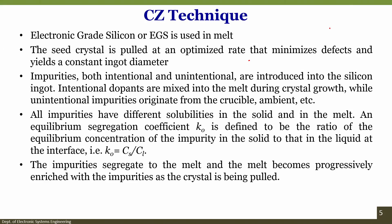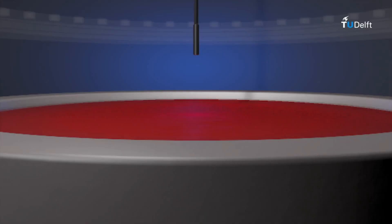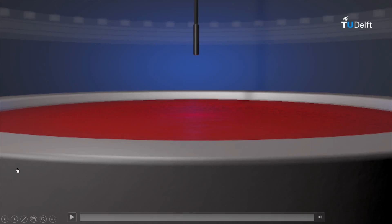Intentional dopants are mixed into the melt during crystal growth, while unintentional impurities originate from the crucible, ambient, etc. All impurities have different solubilities in solid and in the melt. The equilibrium segregation coefficient, defined by K₀, is the ratio of the equilibrium concentration of the impurity in solid to that in liquid. As the crystal is being pulled, the melt becomes progressively enriched with impurities.